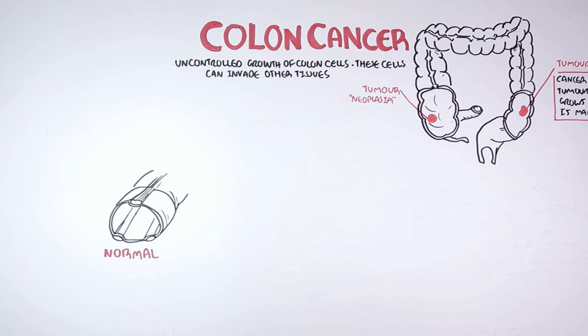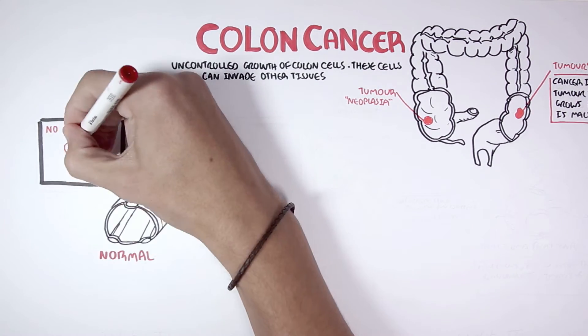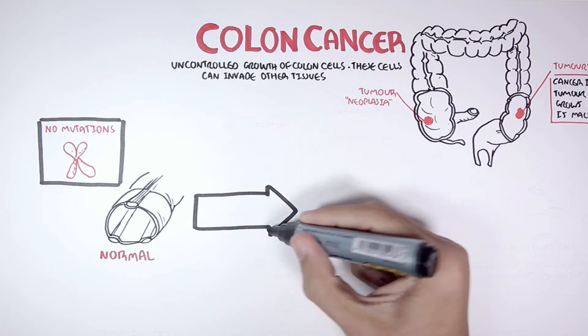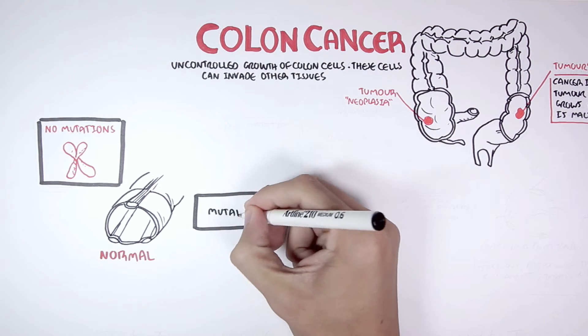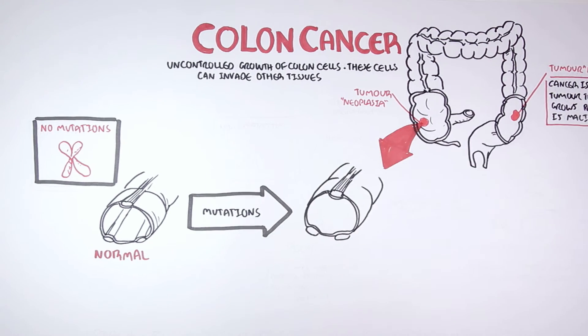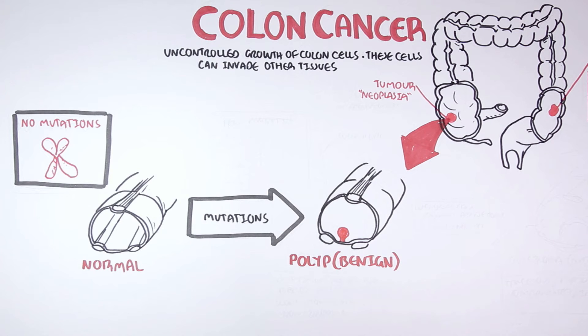So here we have a normal colon. The chromosome, the DNA of this normal colon, have minimal to no mutations and so is quite healthy. However, mutations can and do occur in our body. And so this normal colon can develop a benign polyp. A polyp is a tumor, but it is not cancerous because it is benign.